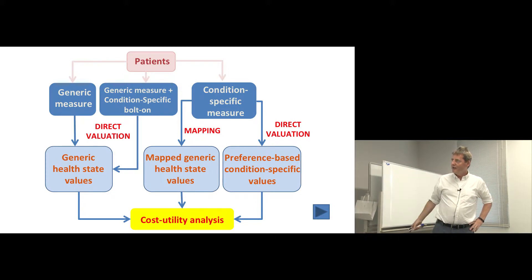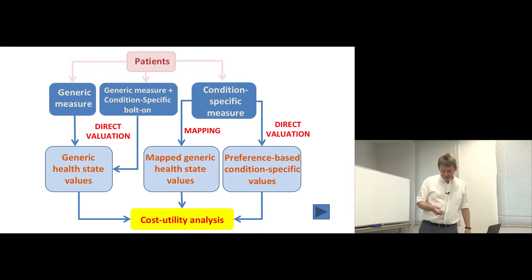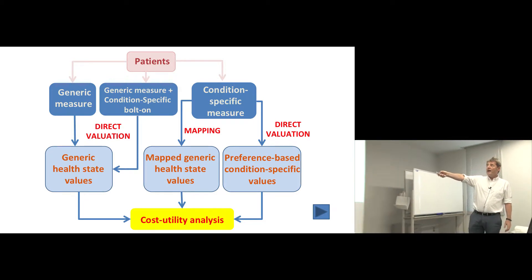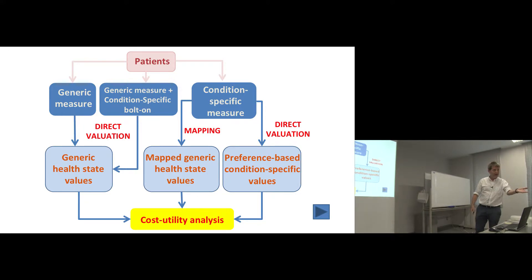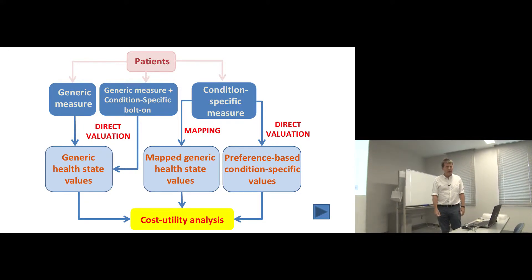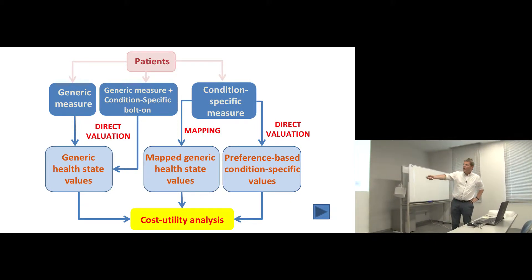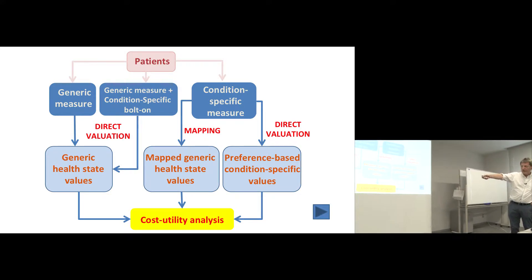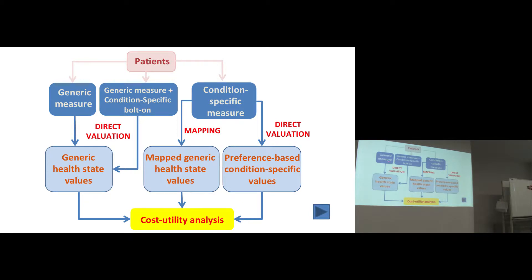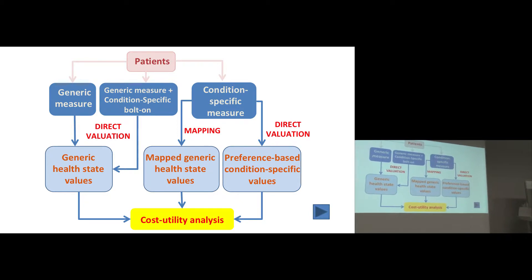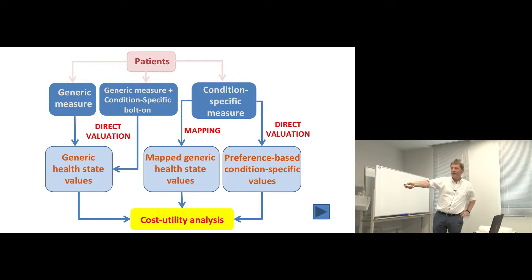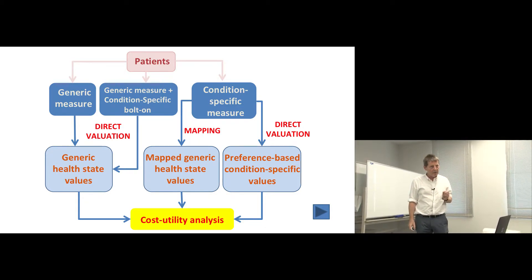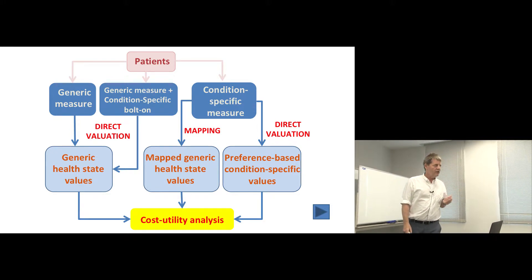For those who prefer a graphic, this is a sketch of what's going on. Everything starts with patients — it's patients who tell us what health state they're in, and to whom we give the EQ5D or SF6D questionnaire. On one pathway there are generic measures such as the EQ5D, which can be directly valued using a range of methods, most commonly time trade-off. This yields generic health state values — a set of numbers attached to different health state descriptions indicating the relative goodness or badness of each state.